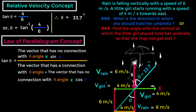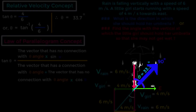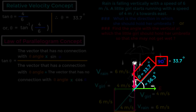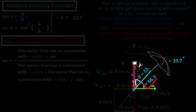Now listen carefully. If we are asked to find the angle with the ground instead of the vertical, we need a different value. Since the vertical gives 33.7 degrees and the total angle between vertical and ground is 90 degrees, we subtract: 90° − 33.7° = 56.3 degrees. So in that case the girl would hold her umbrella at 56.3 degrees with respect to the ground.